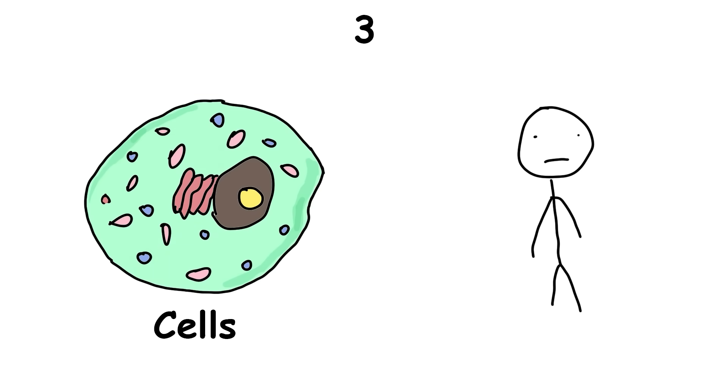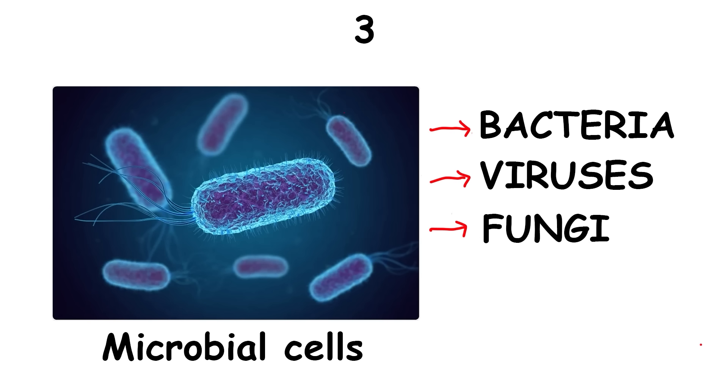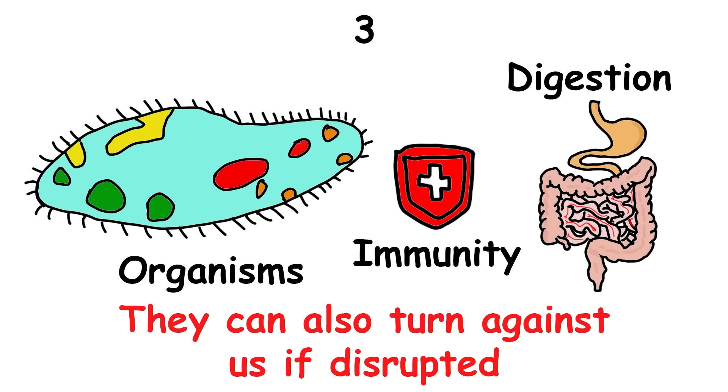More than half of the cells in your body are not human, but are microbial cells like bacteria, viruses, fungi, and other microbes. These organisms play essential roles in digestion and immunity, but they can also turn against us if disrupted.